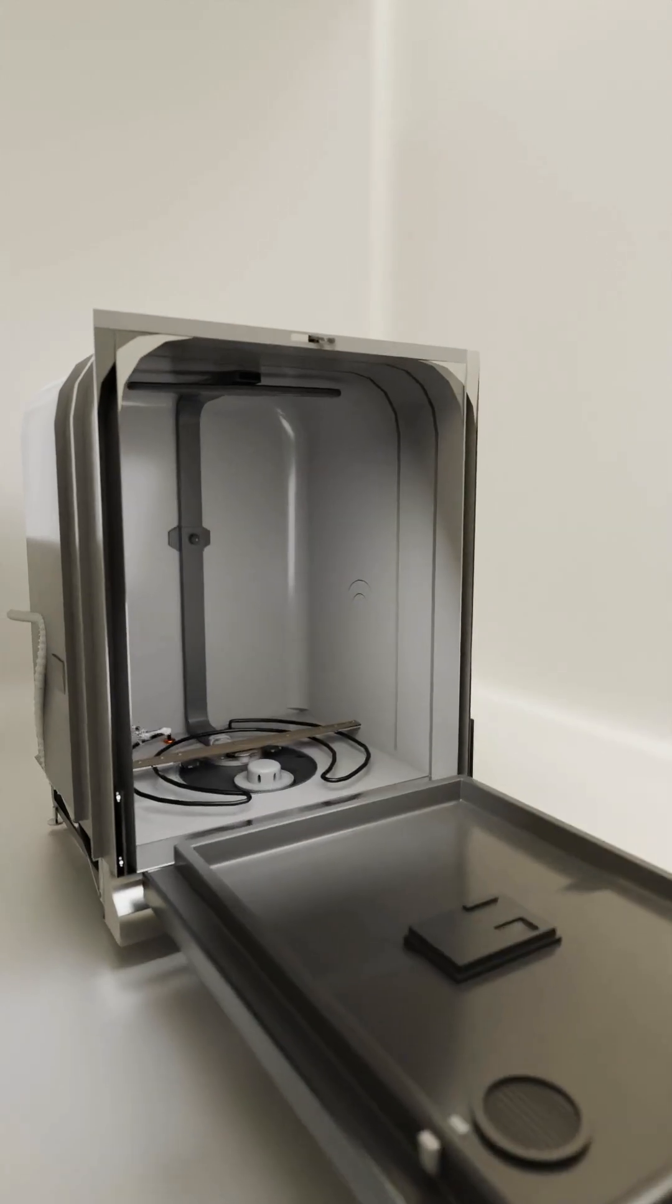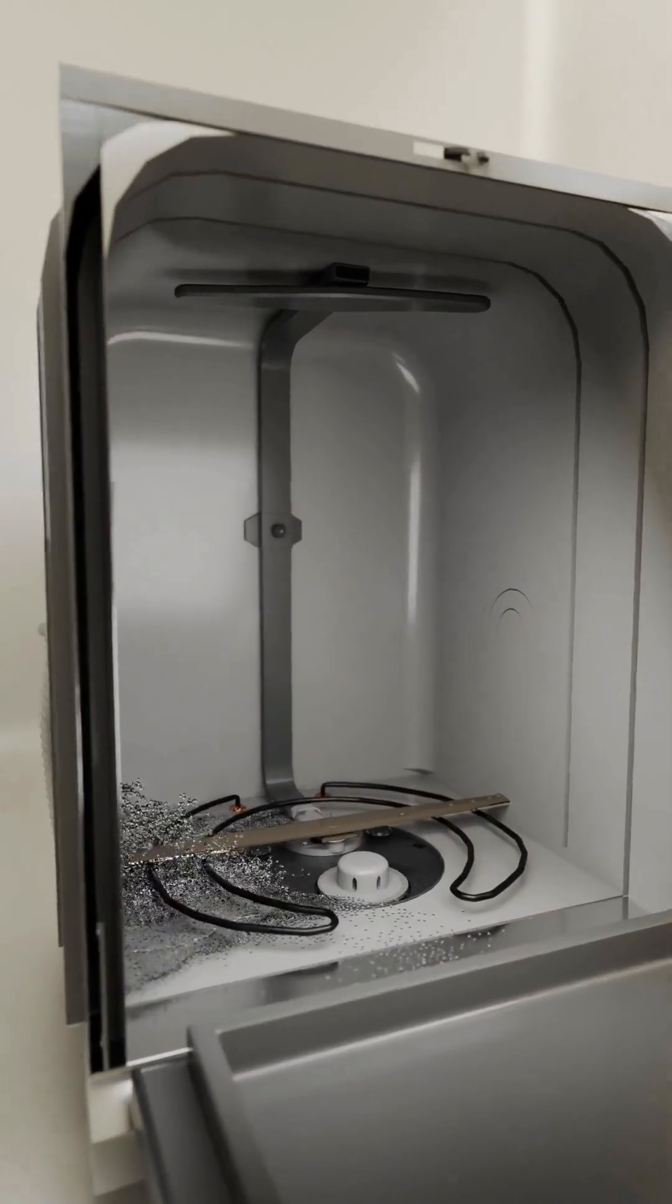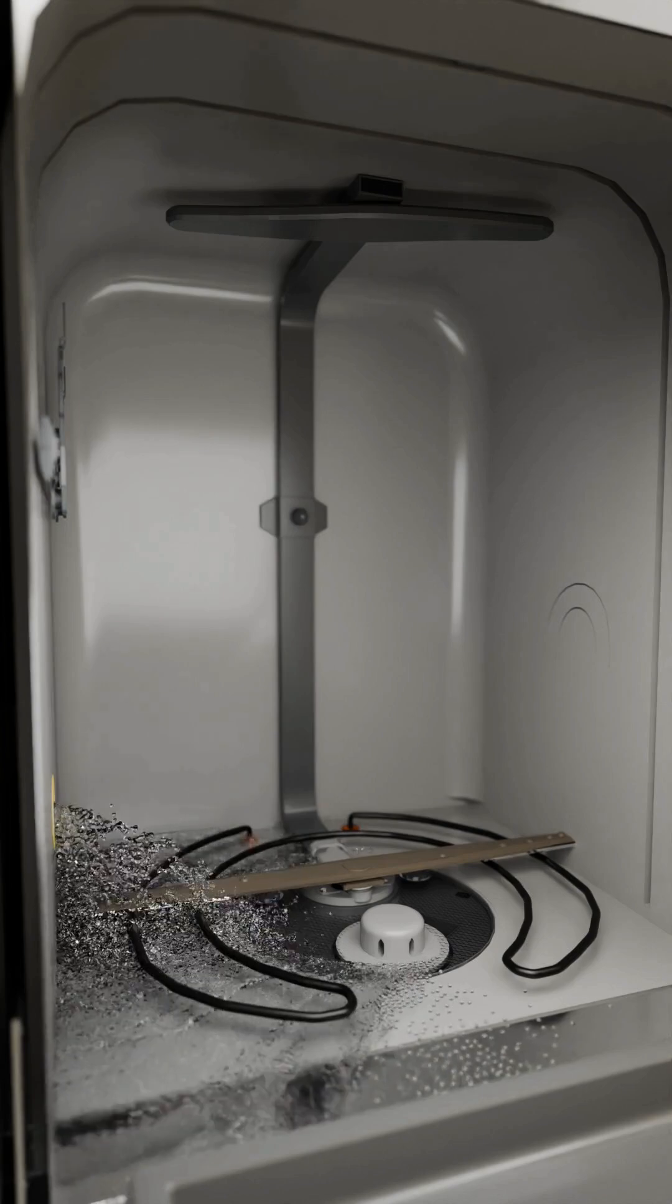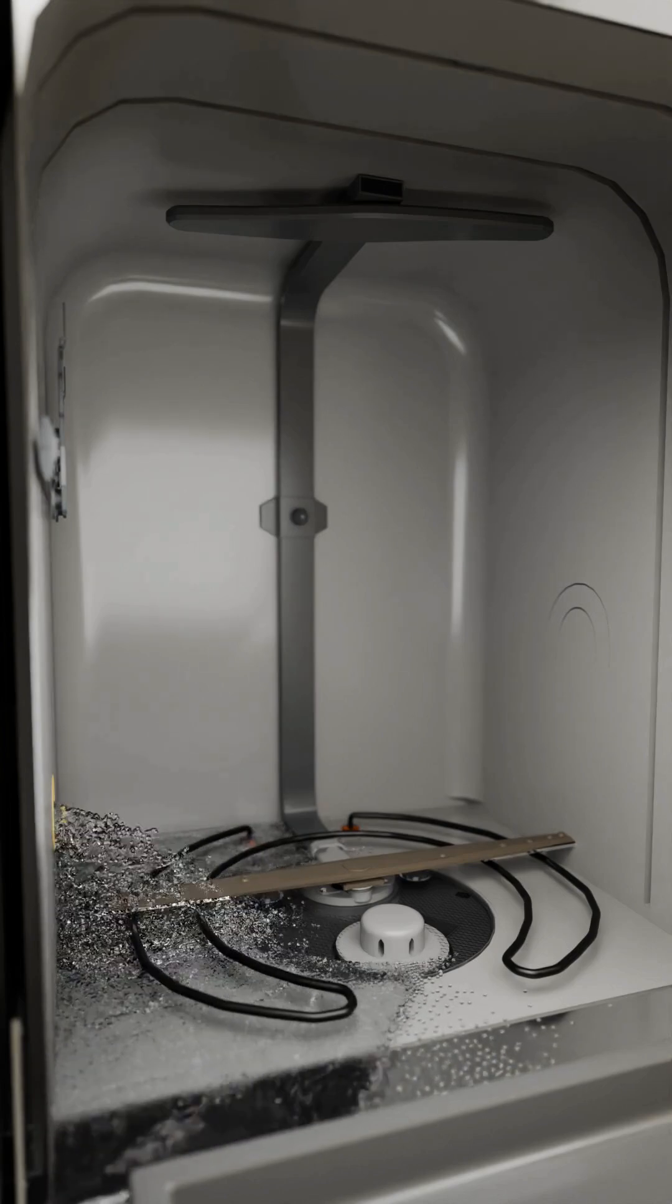When the dishwasher begins its cycle, water flows steadily into the main compartment and simultaneously fills the sump, entering from the inlet located on the left side.